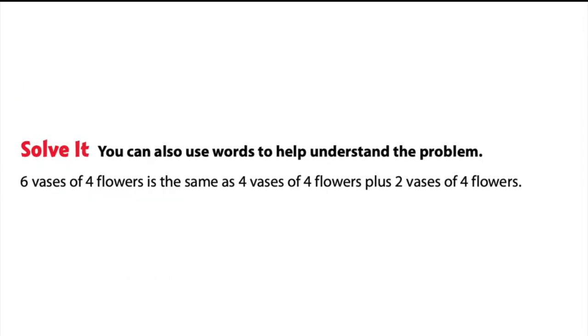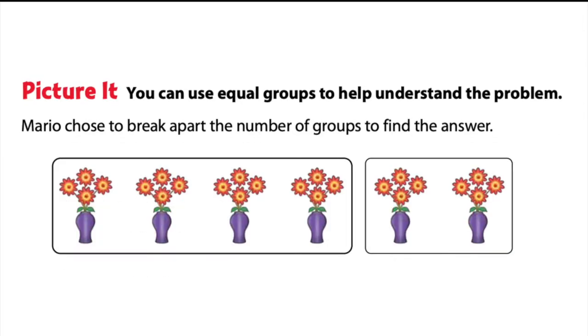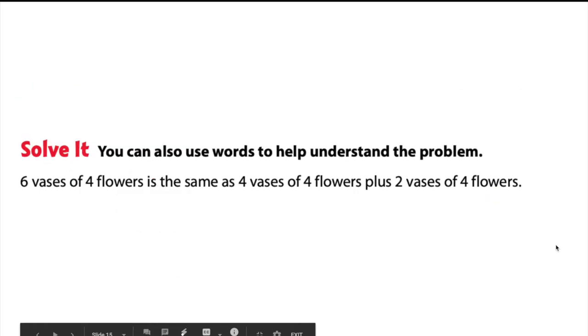You could also think of this in word form if that helps you understand. Six vases of four flowers is the same as four vases of four flowers and two vases of four flowers. So that was the sentence version. And here's the two vases with four flowers in them as well. We didn't get rid of any vases or change the number, so they will have the same answer as six times four.